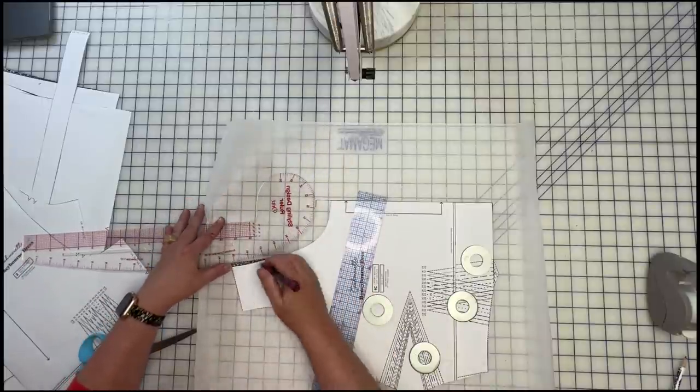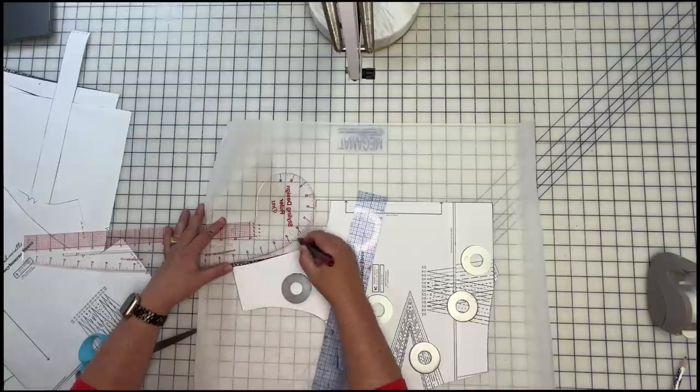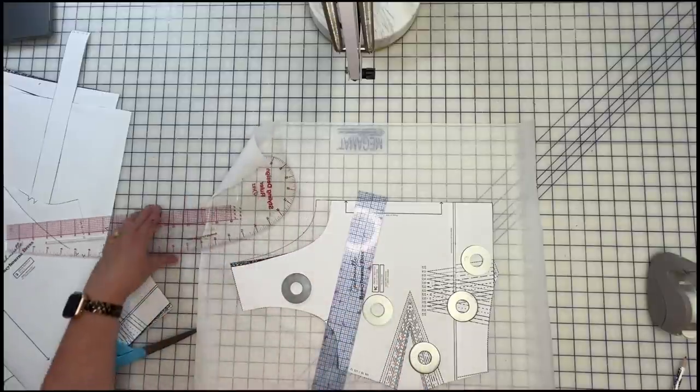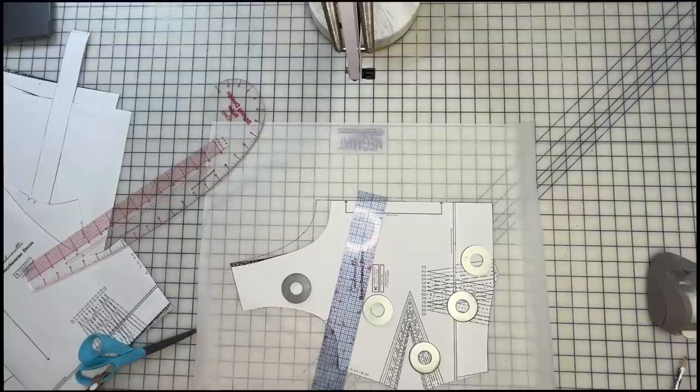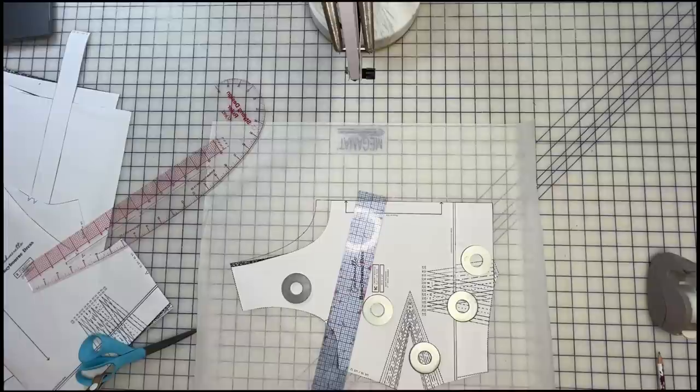And then you would just draw in your new neckline. Now you would need to remeasure this, because that would determine how much bias tape you needed. If you had a facing, you would need to redraw the facing in. And I'll show you how to do that here in a second. So that's how you do that.